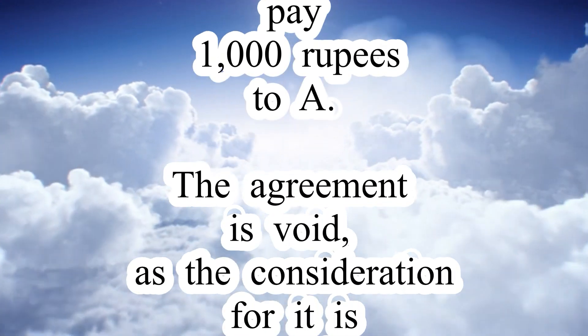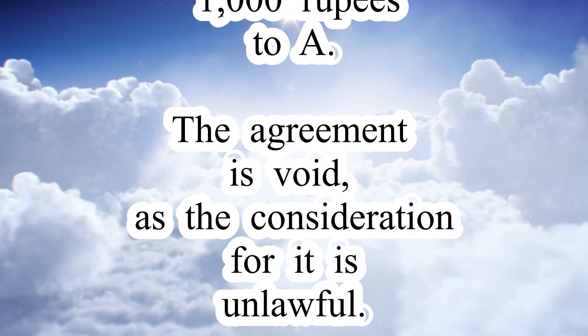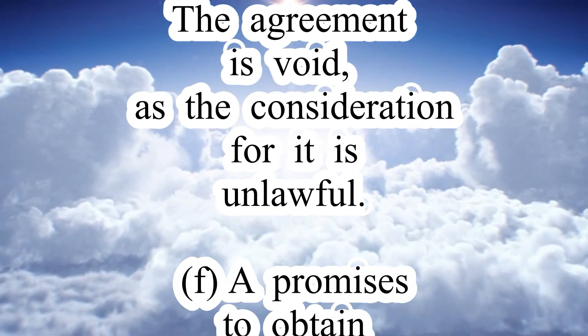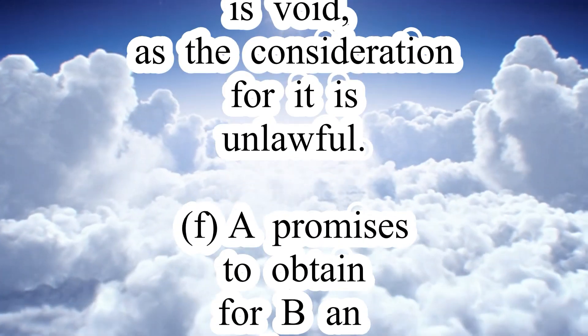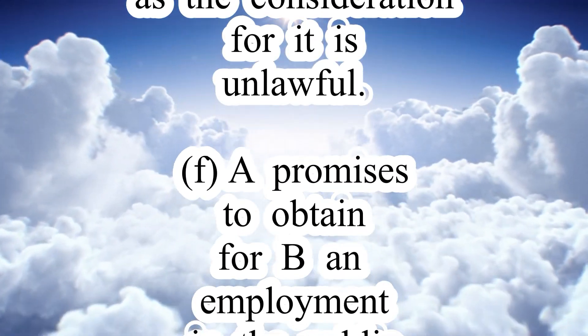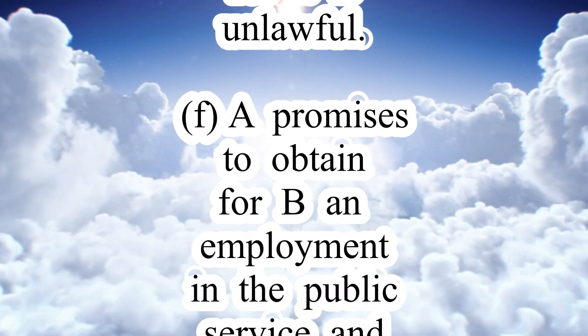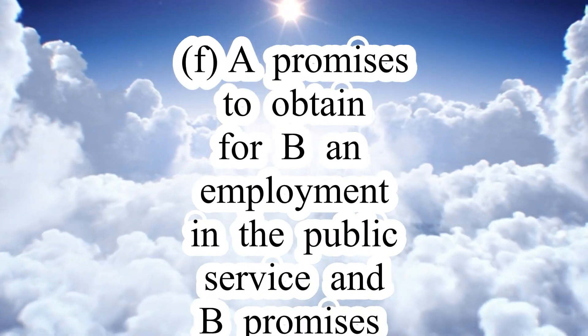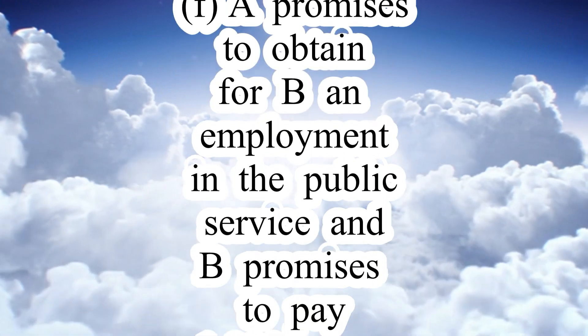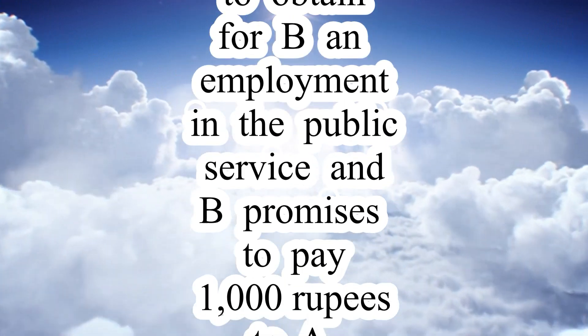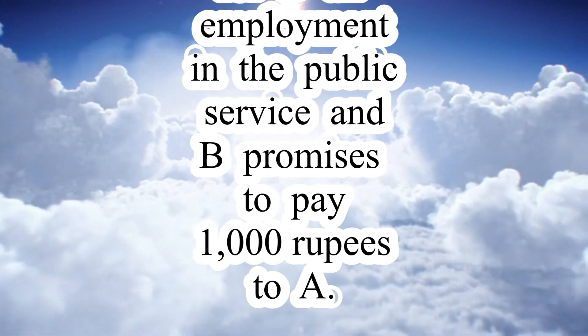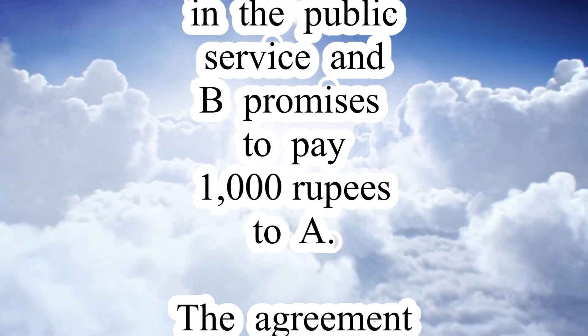Illustration F: A promises to obtain for B an employment in the public service, and B promises to pay Rs. 1,000 to A. The agreement is void, as the consideration for it is unlawful.